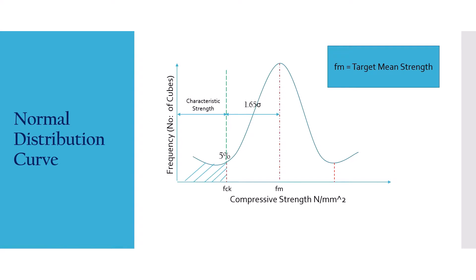In this graph, it is clear that 5% of the test results fall below the characteristic compressive strength, and the remaining 95% show a test result value greater than the target strength, that is 25 N per mm².